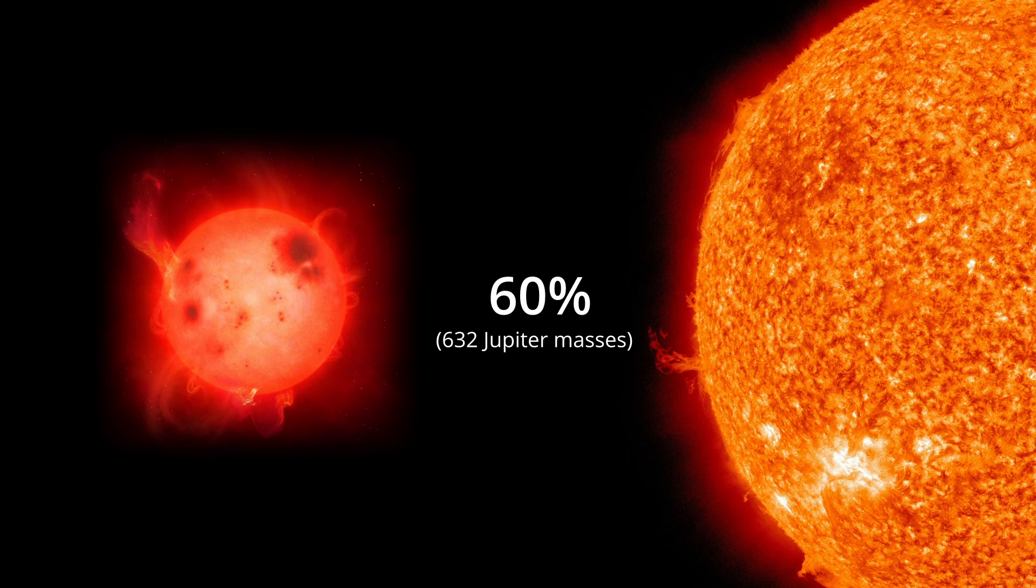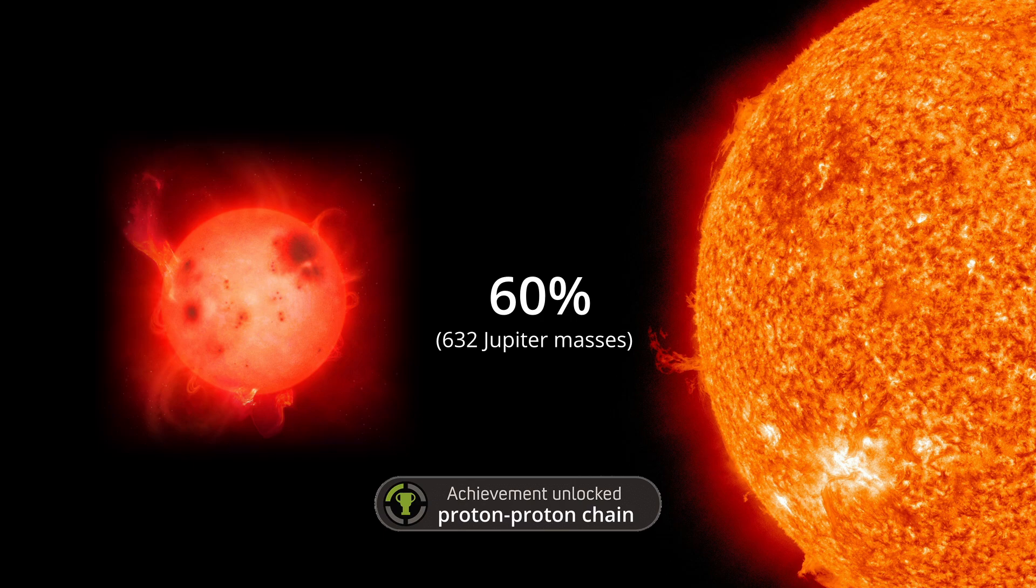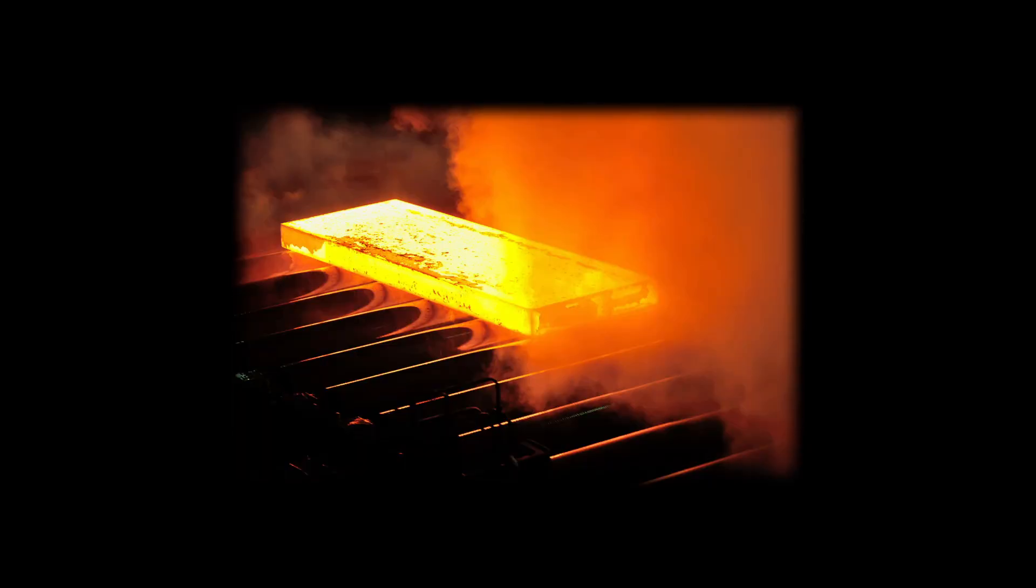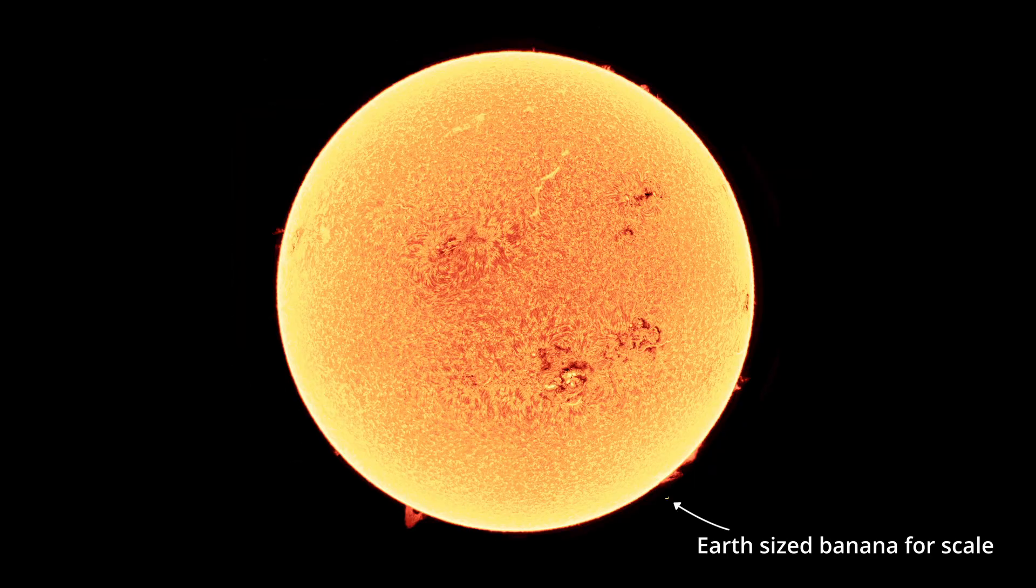They range from 85 Jupiter masses to 60% the mass of the sun, and have enough mass for hydrogen-driven fusion to take place. Much like the name suggests, this makes them glow in a faint deep red, just like a lightly heated piece of metal would.